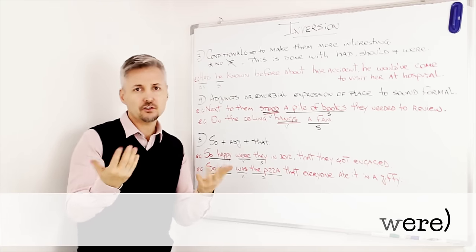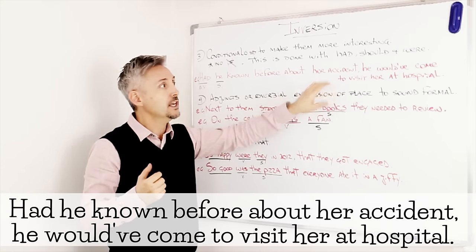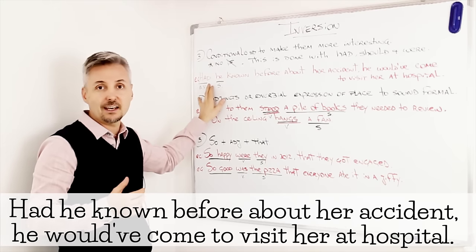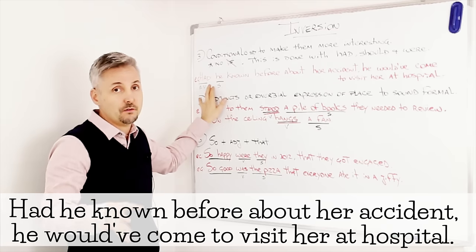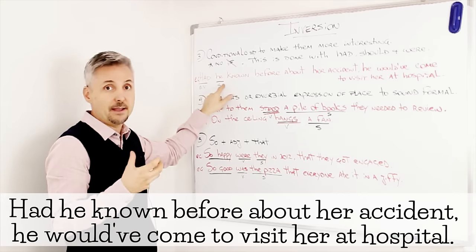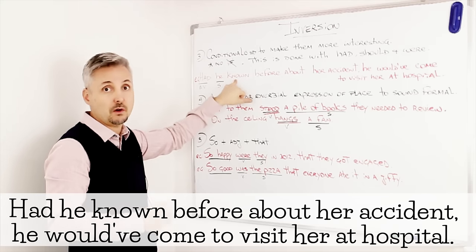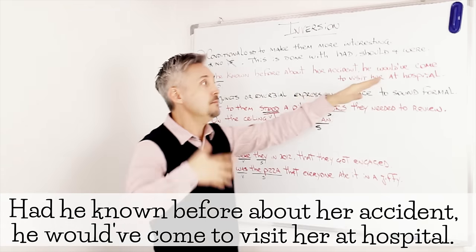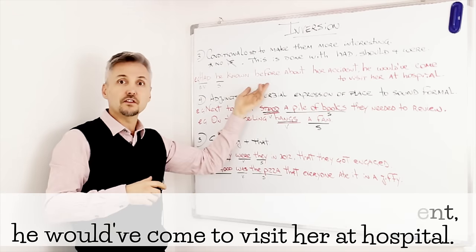Let's look at my introductory example. Had he known before about her accident, he would have come to visit her at hospital. So, obviously, right here, we have had, which is the auxiliary verb of the past perfect, and inverted with the subject, he. So, had he known, and this is the past participle of the verb to know, before about her accident, he would have come to visit her at hospital. What type of conditional is this? This is the third conditional.